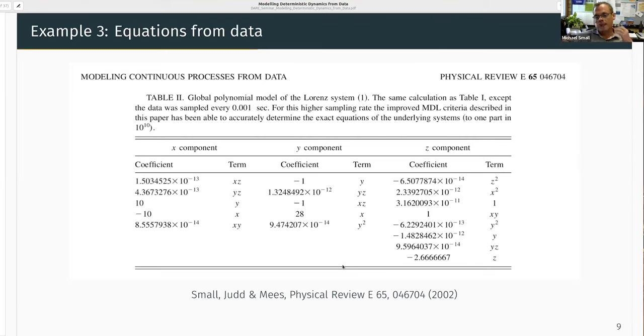The reason I'm showing you this is because if you ignore all those terms that are very, very small, what you're left with x dot equals 10 y minus x, y dot equals minus y minus xz plus x, and z dot equals xy minus 8 thirds z is exactly what we expect for the actual Lorenz equation. So the model, reading the data, fitting these terms, applying regularization, is able to extract the actual underlying dynamics of the system. So that's kind of neat.